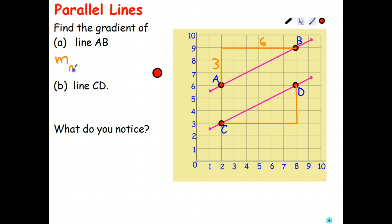By the way, the way we can write the gradient of line AB algebraically is an M for the gradient. And of line AB, just a subscript AB. So if we have two gradients, this is how we can distinguish them.